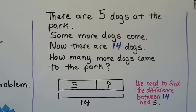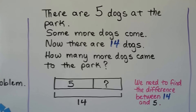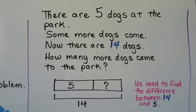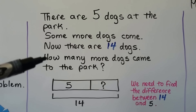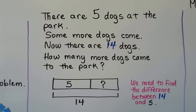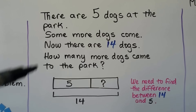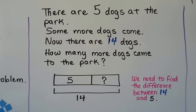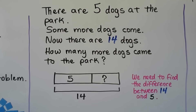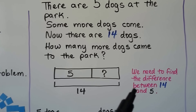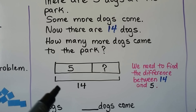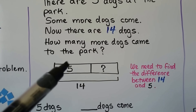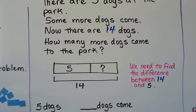There are 5 dogs at the park. Some more dogs come. Now there are 14 dogs. How many more dogs came to the park? We need to find how many more dogs came to the park. We need to use the 5 and the 14 — we need to find the difference between 14 and 5. There were 5 dogs, some more came, and now there are 14.